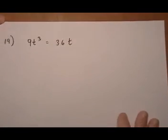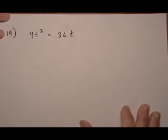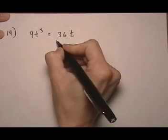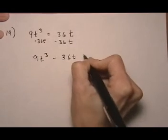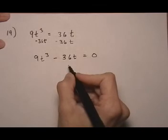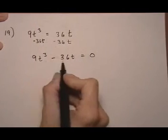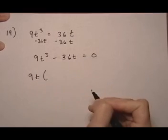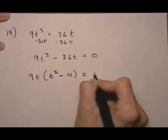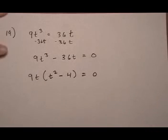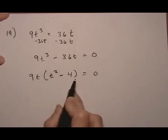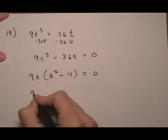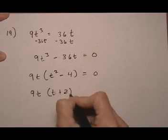We have time for one more. The equation is 9t cubed equals 36t. First, get it into the equal zero format by taking away 36t on both sides, giving 9t cubed minus 36t equals zero. Now factor completely: we can pull out a t and a greatest common factor of 9. Taking out 9t everywhere, we're left with 9t times the quantity t squared minus 4, all equal to zero. But we're not done yet — t squared minus 4 can be factored further as a difference of squares: t plus 2 times t minus 2.